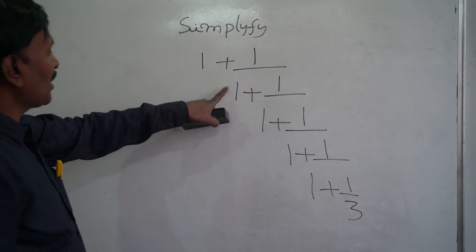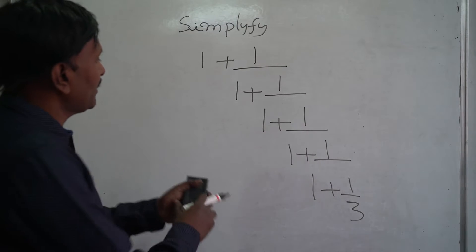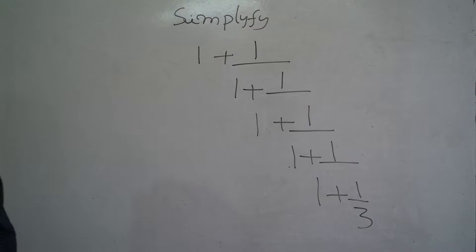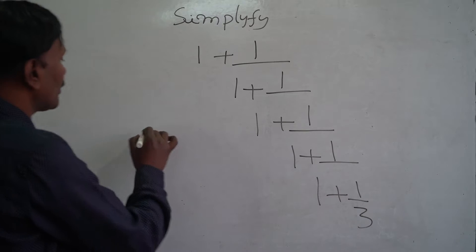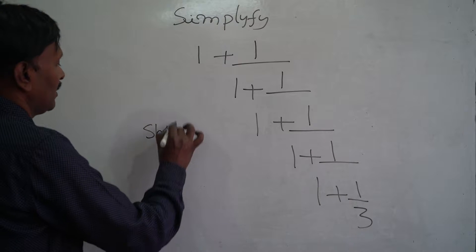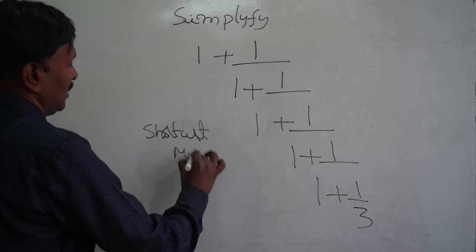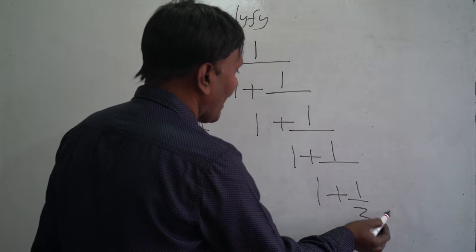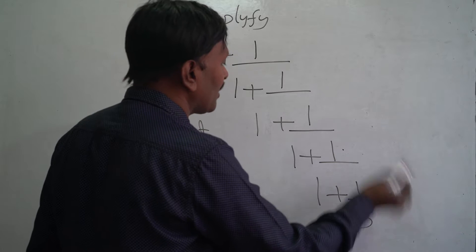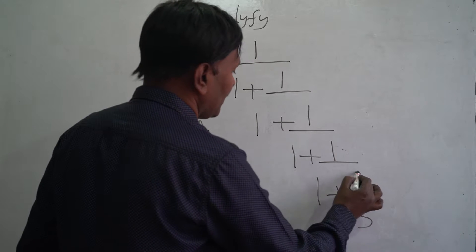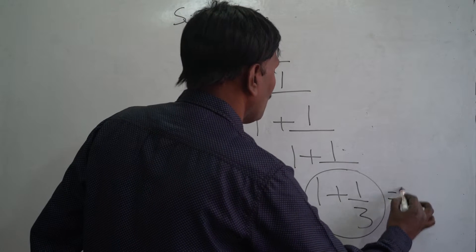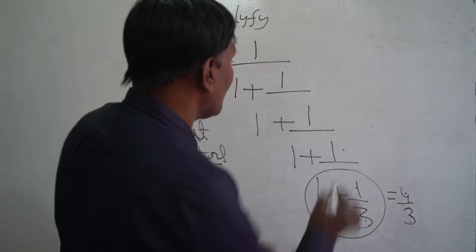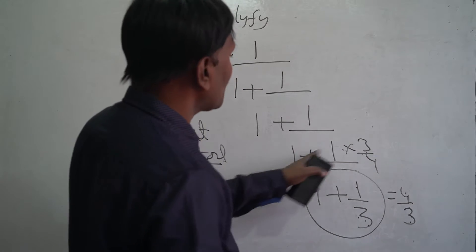Here the second example: 1 plus 1 by 1 plus 1 by 1 plus 1 by 1 plus 1 by 3. We are not doing the general LCM procedure — directly we are giving the shortcut method. See here the condition: the value which comes here means the fraction will be reversed. 1 plus 1 by 3 is 4 by 3. So 4 by 3 becomes 3 by 4 when it comes up.